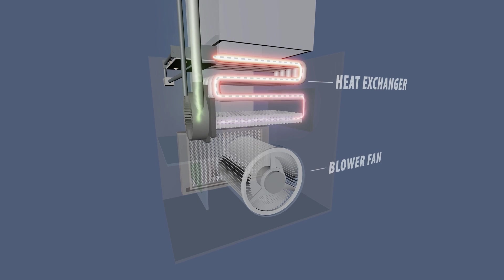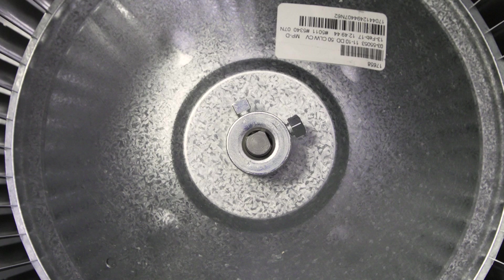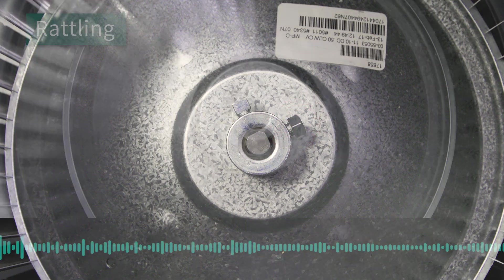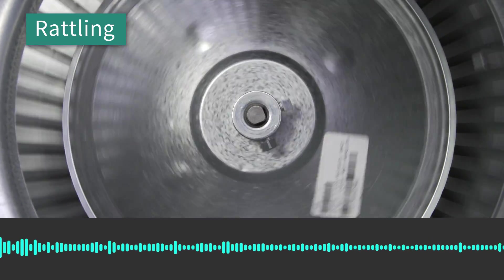After the burners are lit, the blower fan pushes the warm air around your home. The wheel is generally held on by a set screw. If the set screw is loose, then the blower wheel will shake and make a rattling noise when it turns.